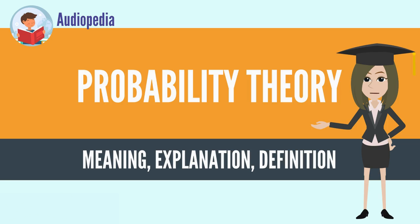Although it is not possible to perfectly predict random events, much can be said about their behavior. Two major results in probability theory describing such behavior are the law of large numbers and the central limit theorem.